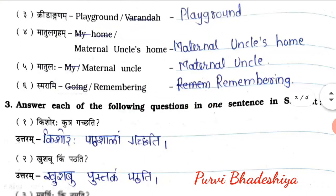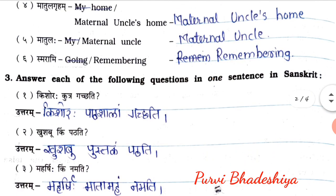Third: Kridanganam means Playground. Fourth: Matulgruham means maternal uncle's home. Fifth: Matulaha means maternal uncle. And sixth: Smarami means remembering.